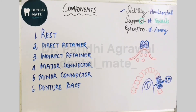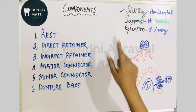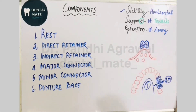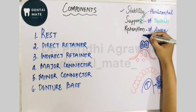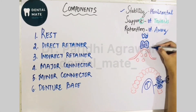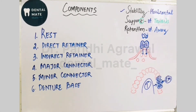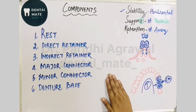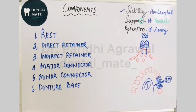Next are support and retention. Let's go through their definitions. Support is the resistance to movement in the vertical direction towards the tissue. Stability was in the horizontal direction, but support and retention are both in the vertical direction. When a tooth from the opposing arch contacts the prosthesis during mastication, it pushes the prosthesis towards the tissue. The resistance to this movement is called support.